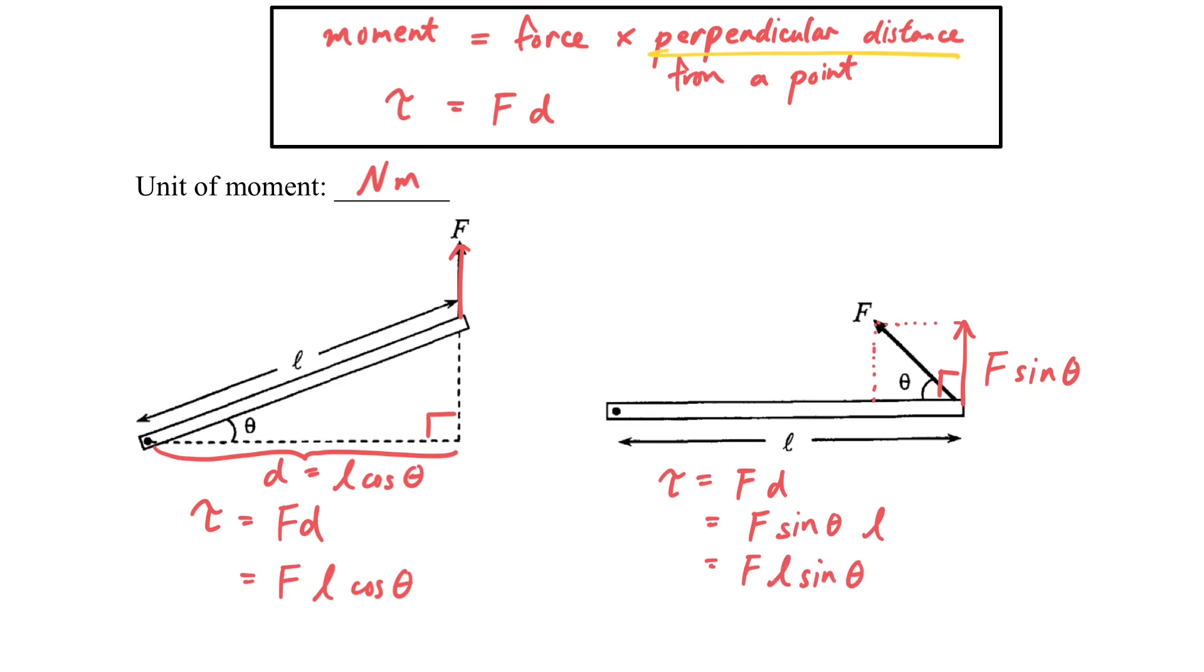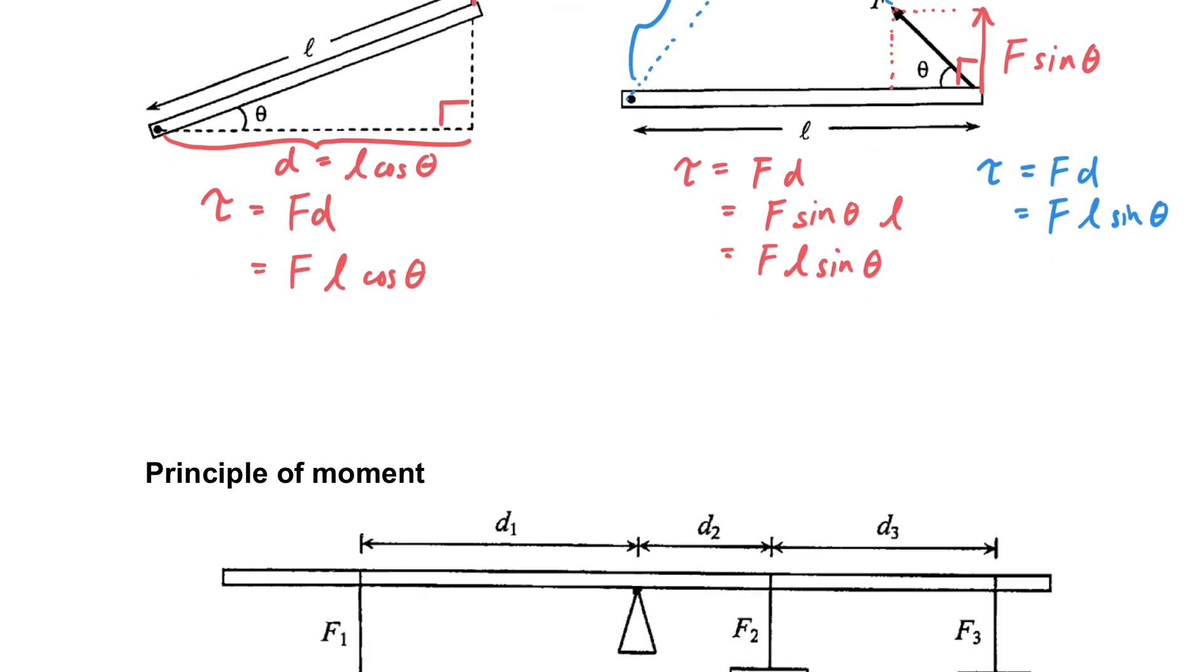Now, we can also consider the same case in another way around. Suppose we don't want to change the force. We can redefine the perpendicular distance. So we will define the perpendicular distance of the force, which is d equals to l sine theta, which is similar to the previous figure. You will find that actually we will get the same result. So we can always think of the moment in both ways.